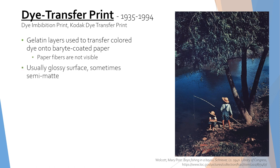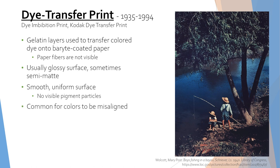Dye transfer prints can sometimes be semi-matte. Unlike Carbro prints, dye transfer prints have a smooth surface since the gelatin layers are removed. This also means that there will be no visible pigment particles in a dye transfer print. Since the colors are applied in separate layers, it is common for them to be misaligned.